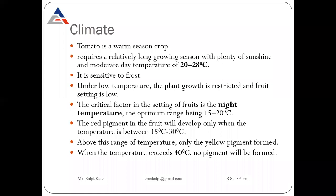Red pigment formation in tomato also depends upon temperature. The temperature for development of red pigment should be in the range of 15 to 30 degrees Celsius. If the temperature range is above this, then only yellow pigment will be formed and there will be no red pigment. When temperature exceeds 40 degrees Celsius, no pigment — neither red nor yellow — will be formed.